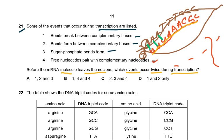Before the mRNA molecule leaves the nucleus, which events occur twice during transcription? Bonds break between complementary bases once when DNA unzips, and again when mRNA leaves. Bonds form between complementary bases when nucleotides pair with the template strand, and again when the DNA zips back together. That is why the answer is D — events one and two each occur twice before mRNA leaves the nucleus.